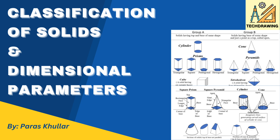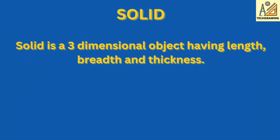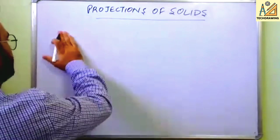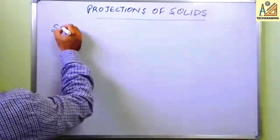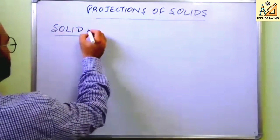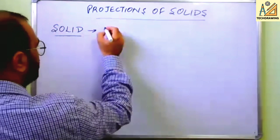Hello students, in this video we will study the classification of solids in engineering drawing and the various dimensional parameters of the solids. A solid is an object which has length, breadth, and thickness — three dimensions. So basically, a solid is a 3D object.